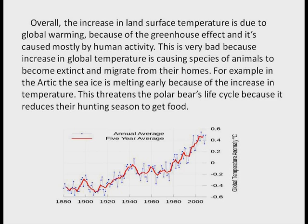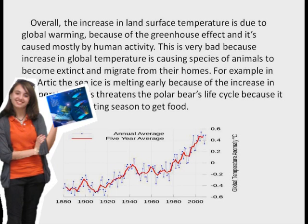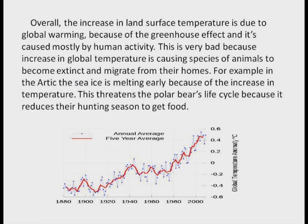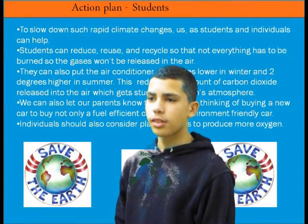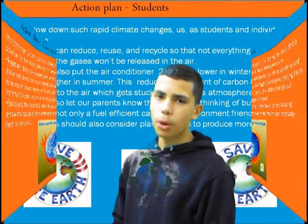Overall, the increase in land surface temperature is due to global warming because of the greenhouse effect, and it is caused mostly by human activity. This is very bad because the increase in global temperature is causing species of animals to become extinct and migrate from their homes. For example, in the Arctic the sea ice is melting because of the increase in temperature, which threatens the polar bear's life cycle by reducing their hunting season to get food. As students, we found that to make things, we also made gases that got into the atmosphere and caused warming.